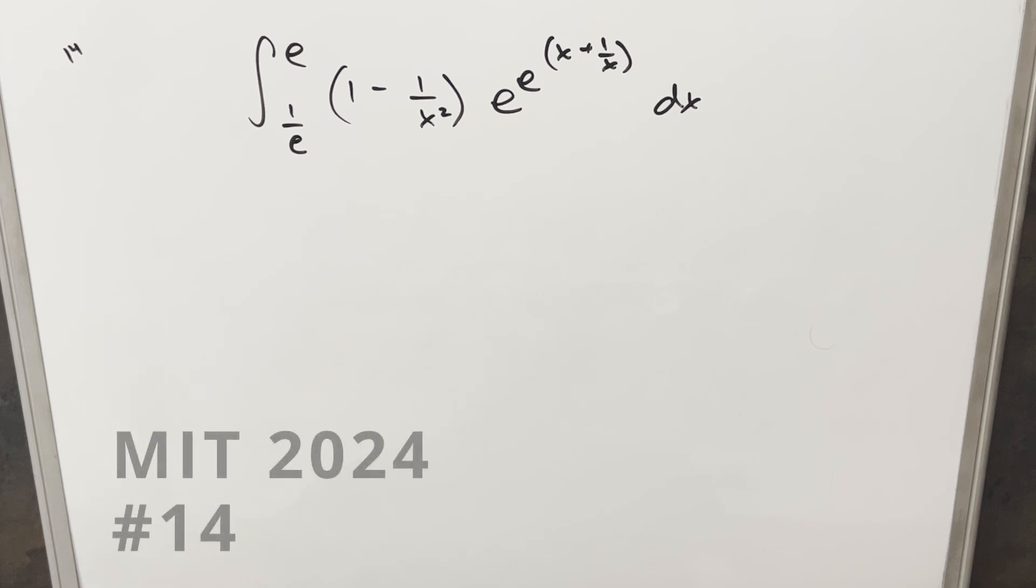Okay, what I wanted to do today was just follow up on a video I did recently from MIT Integration B 2024 Problem 14. In that video, I mentioned another method that I didn't do—that we could have just done a u-substitution.